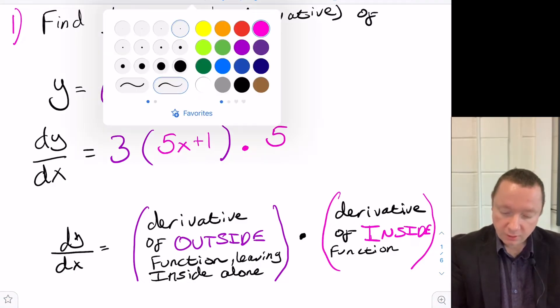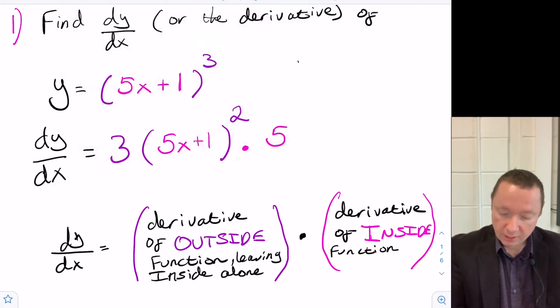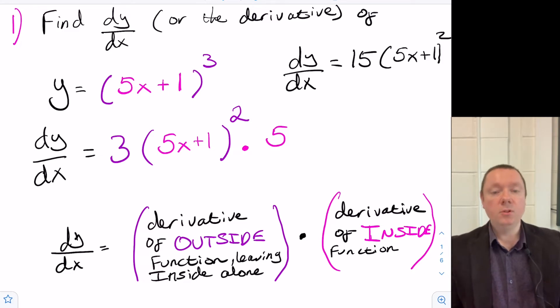So our final answer, just tidying it up a little bit, is dy/dx equals 3 times 5 is 15, times (5x plus 1) squared. So I suppose the main key point to remember is if you've ever got a function within a function, to find the derivative you do the derivative of the outside function, just leaving the inside alone, and then you do the derivative of the inside function.